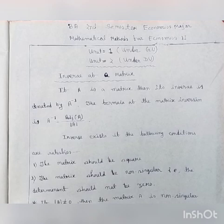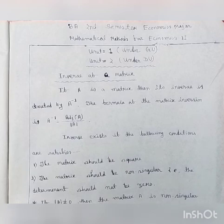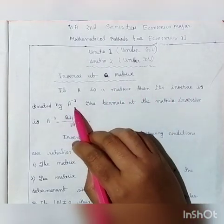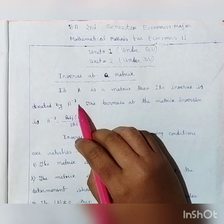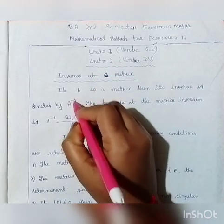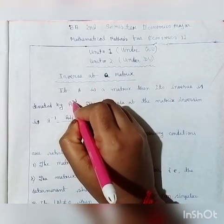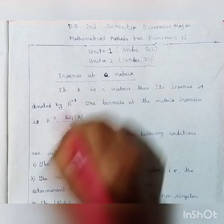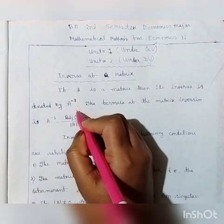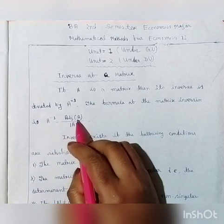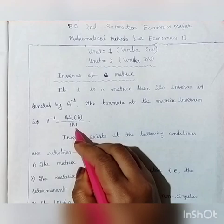I have a question: find the inverse of matrix A. If A is a matrix, then its inverse is denoted by A inverse. A inverse of matrix is denoted by A inverse, written as A minus 1. The formula for the inverse of a matrix is: A inverse equals the adjugate of A divided by the determinant of A.